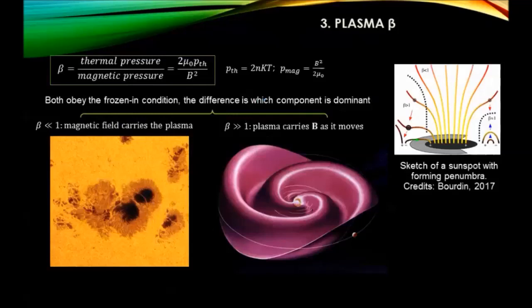Now let's talk about the plasma beta, the parameter that gives the ratio of how much plasma there is with respect to the magnetic field. It's defined as the thermal pressure over the magnetic pressure. All plasma obeys the frozen-in condition, so plasma and magnetic field always influence one another, but it depends which component dominates. If beta is much less than one, then B must be really high, meaning the magnetic field dominates - this happens at the center of a sunspot.